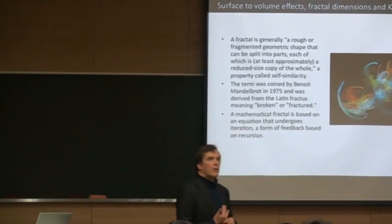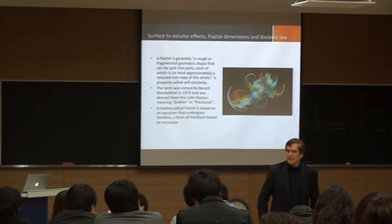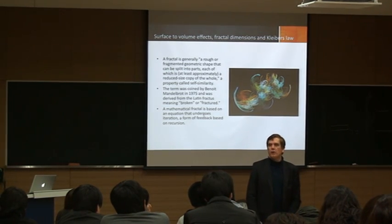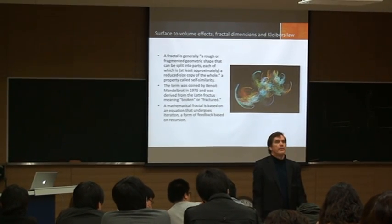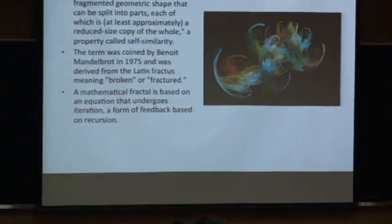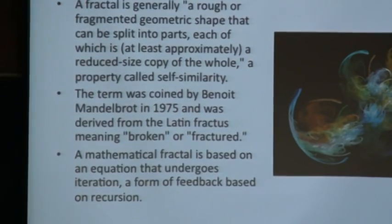I want to now talk a little bit about fractals, because nature seems to use a fractal design over and over, and we want to know the reason behind that. A fractal is generally a rough or fragmented geometric shape that can be split into parts, each of which is at least approximately a reduced-size copy of the whole. That's called self-similarity.